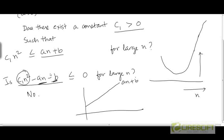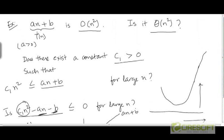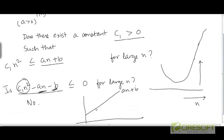When we asked whether there exists an upper bound for an plus b — which was the first part, when we argued that an plus b is O(n²) — what we really argued was that there does exist a constant multiple of n² such that for large values of n, this constant multiple of n² has its graph lying above an plus b. Now, is it possible for there to be another constant c₁ such that c₁ times n² will forever remain below this line for large n?